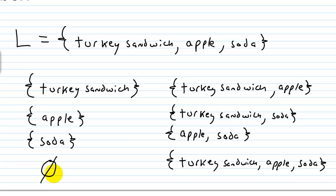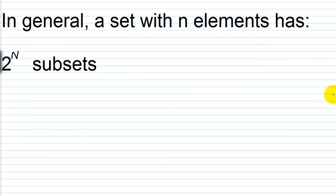I can choose to take nothing from the lunch pail. That's the most confusing thing, and that's why I set this example up — when I use numbers or letters, people can't really visualize what's going on. When I use a lunch pail, everybody can say, well, I can always choose to not take anything, so that's a subset. So we would have exactly eight subsets that can be made from set L.